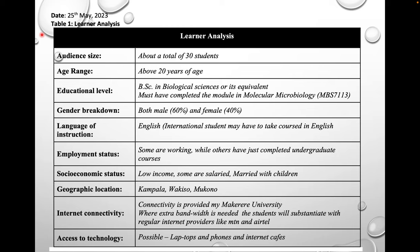Part 1 is not yet done — we need to describe the audience, the learners who are going to enroll into the course. From previous experience, we've been expecting about 30 students. The age range: they are master's students, so they are above 20 years up to retirement age. Level of education: they must have an undergraduate degree — a BSc in Biological Sciences — and must have completed an initial module taught in the first semester, Molecular Biology, MBS 7113. The gender breakdown from previous experience is 60% male and 40% female.